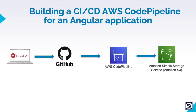Hey everyone, in this video we are going to be building a CI/CD pipeline for an Angular application using AWS CodePipeline. Let's take a look at what our deployment architecture is going to look like. We'll be using an Angular application located in a GitHub repository, then we'll configure AWS CodePipeline so that whenever we commit any changes, CodePipeline will detect them and start the deployment process.